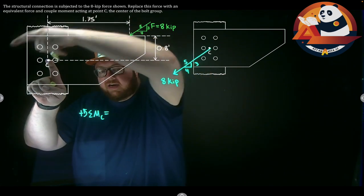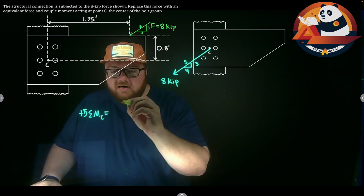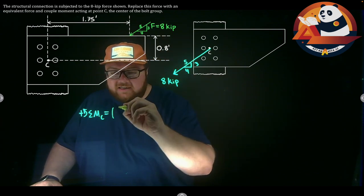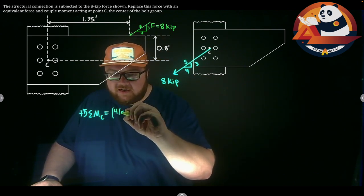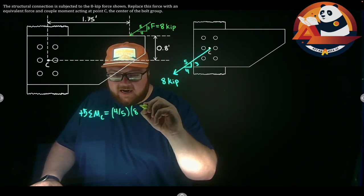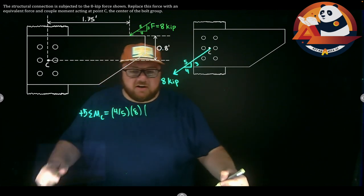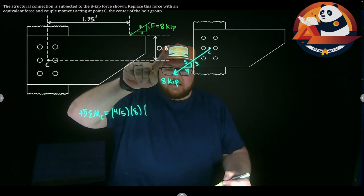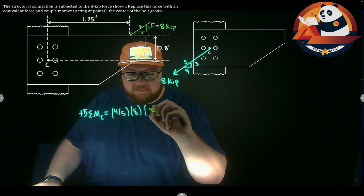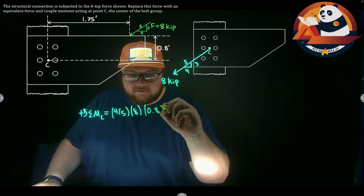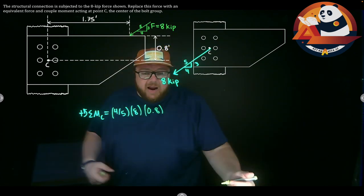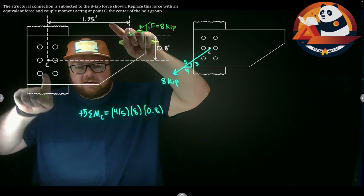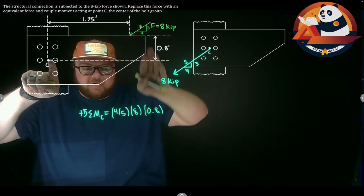The X component is going to the left. We pin our paper at C and push the left up above C, we're going to get a counterclockwise rotation, so that should be positive. So F_x, four-fifths of eight, four-fifths times eight, times what's our distance from the X component force's line of action down to C, which is 0.8 feet.